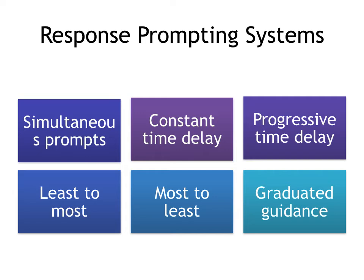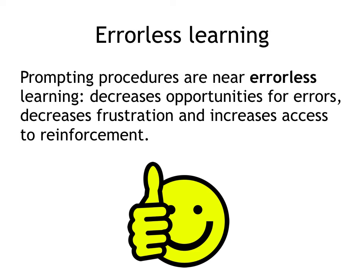Last week we talked about prompting systems and covered least-to-most and most-to-least. Today we'll talk about the time delay system. Time delay methods include the simultaneous prompt system, simultaneous time delay, constant time delay, and progressive time delay. These three time delay methods look similar but have slight differences. We want our students to learn without error, and by providing systematic prompting procedures, we want to help our students, decrease opportunity for errors, and increase access to reinforcement.